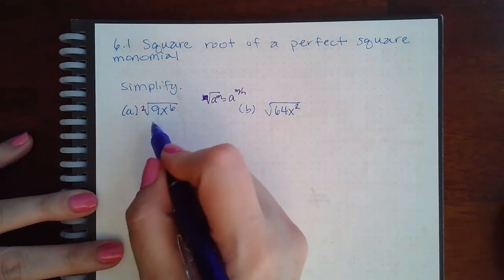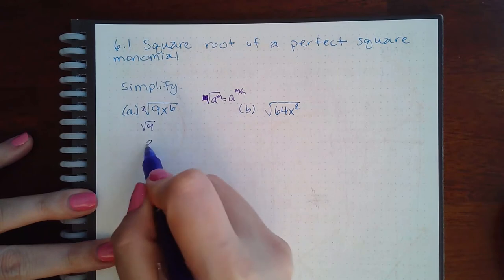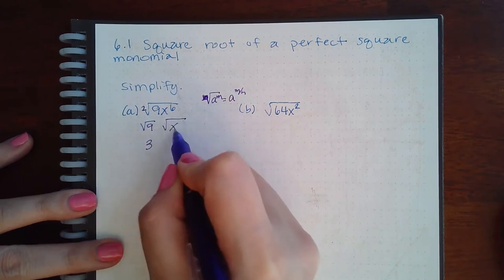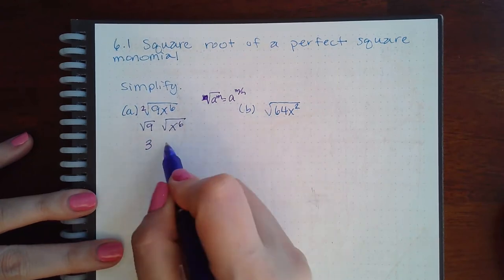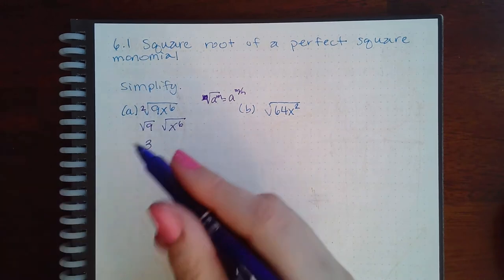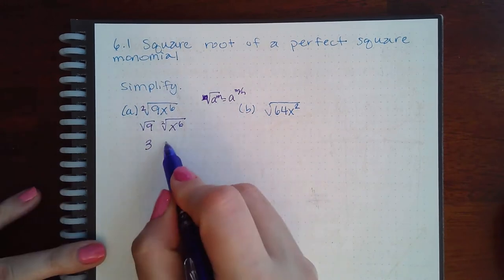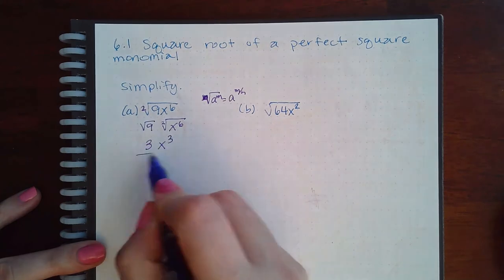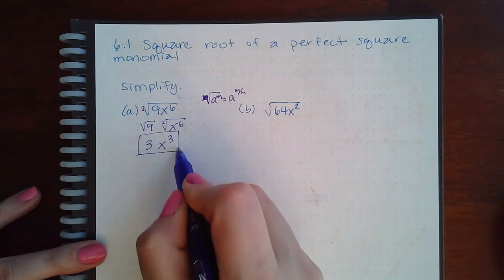So for the number, I can do the square root of 9. That's just 3. And when I go to do the variables, the square root of x squared, 6 divided by the invisible 2 that's here would be x to the third. And so this is the final response for that one.